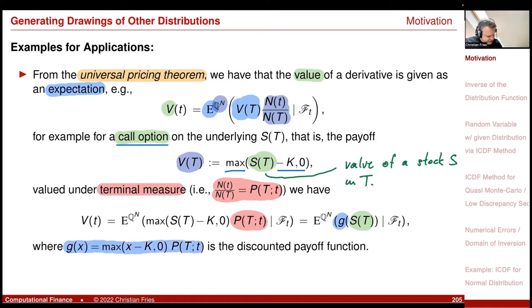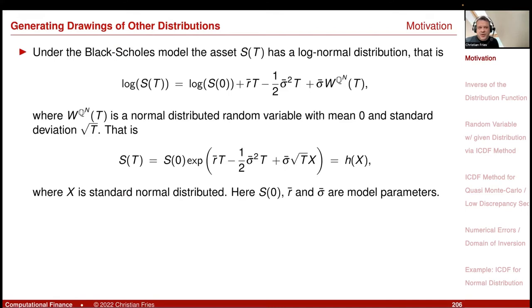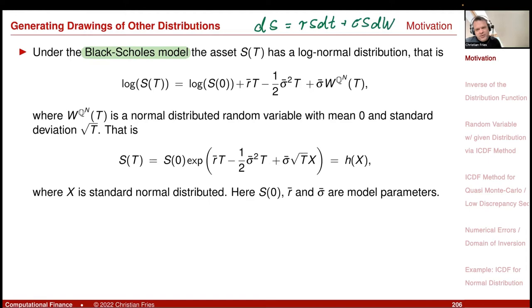We are in the situation of valuing a function g of a random variable — the payoff function: maximum of X minus K and zero. The discounted payoff is a function of the random variable S(T). The stock value S(T) is not uniform; it is an example where I'm interested in the expectation of a function of a non-uniform random variable. Assuming the Black-Scholes model, the stock dynamics are dS = rS dt + σS dW.